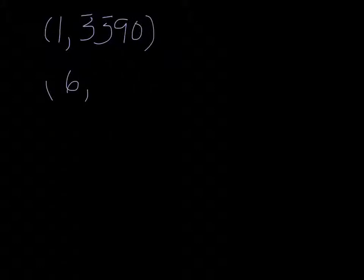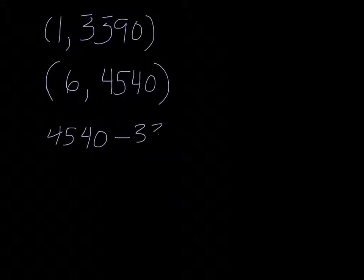In 1991, the moose population in a park was measured to be 3390. By 1996, the population was measured again to be 4540. If the population continues to change linearly, find a formula for the moose population, P, in terms of T, the year since 1990. So we have two points here. 1991, or it's going to be one year after 1990, would be 3390 in that year. And then in 1996, which is six years after 1990, the population was 4540. So if we subtract the rise, or the vertical change, and divide that by the horizontal change, we can get our slope. So 4540 minus 3390 divided by five is 230.